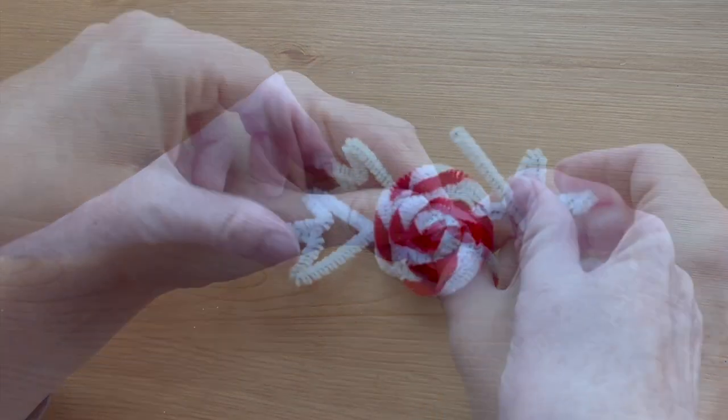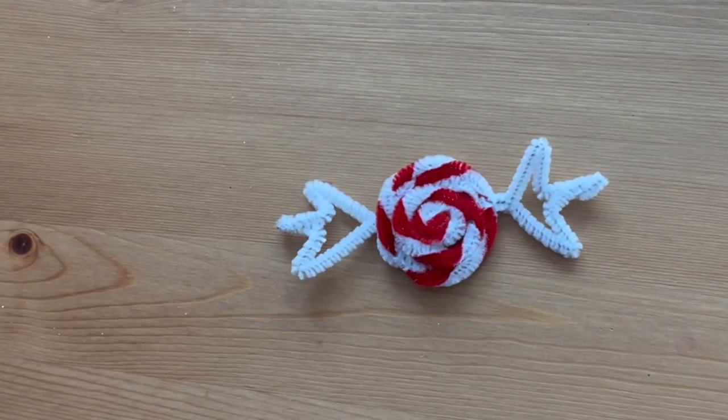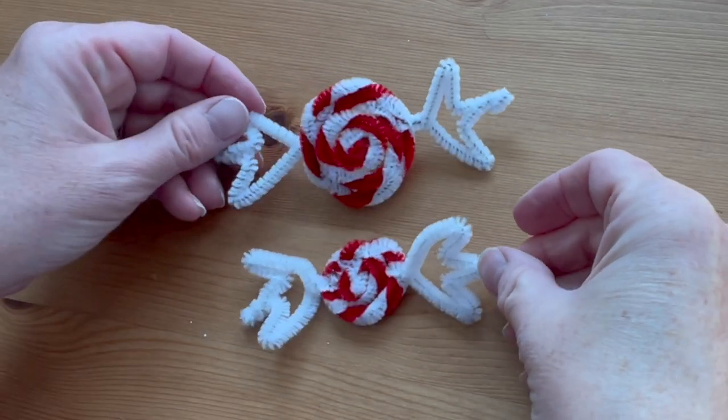To make the smaller mint, use half red and half white for the initial twist.